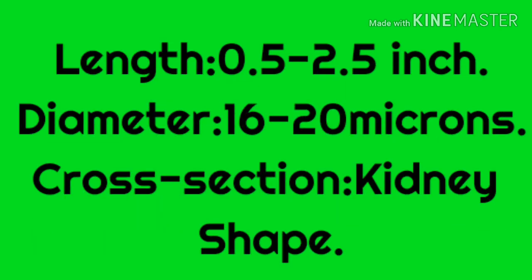Diameter. Cotton fiber diameter is approximately 20 microns. Cross section. The cross-sectional shape of cotton fiber is kidney-shaped.